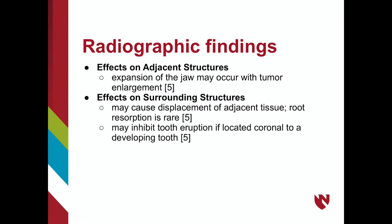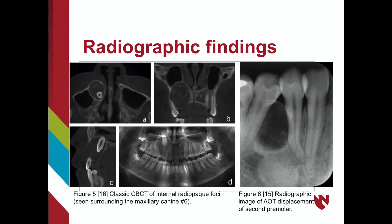As the tumor enlarges, some expansion of the jaw may occur; however, the outer cortex is maintained. Adenomatoid odontogenic tumors may cause the displacement of adjacent teeth; however, root resorption is rare. If the epicenter of the lesion is located coronal to a developing tooth, it may inhibit eruption of the tooth.